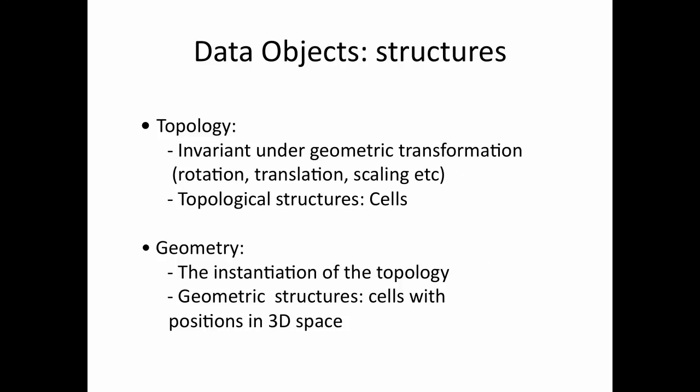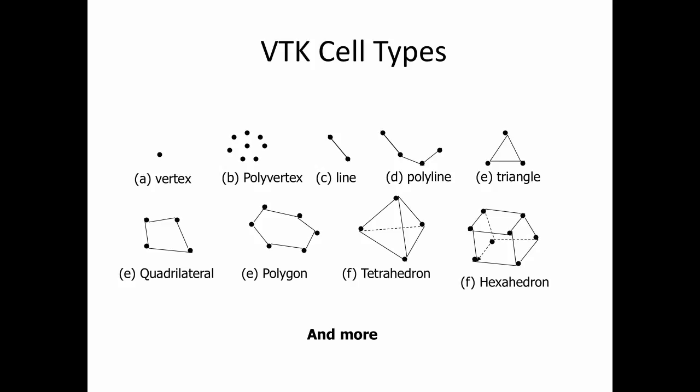About the structures of the dataset, we can divide the information into topology and geometry. Topology information is invariant under geometric transformations such as rotation, translation, and scaling. VTK supports different cell types: point, lines, triangles, tetrahedron — those are the topology, because even if you transform a triangle it is still a triangle, so the topology remains unchanged. The geometry is the instantiation of the topology — it deals with the size of the cell, the position of the cell, the orientation of the cells, etc. These are the different topologies for the VTK cells, also called VTK cell types.